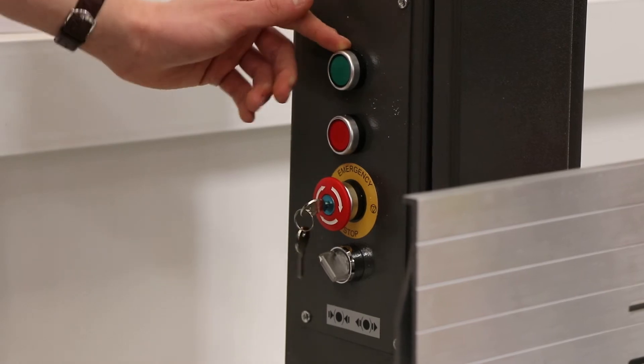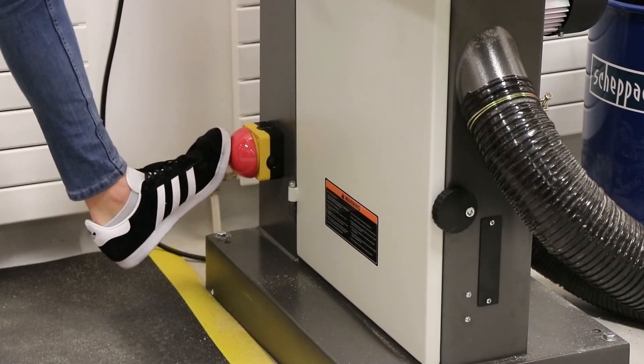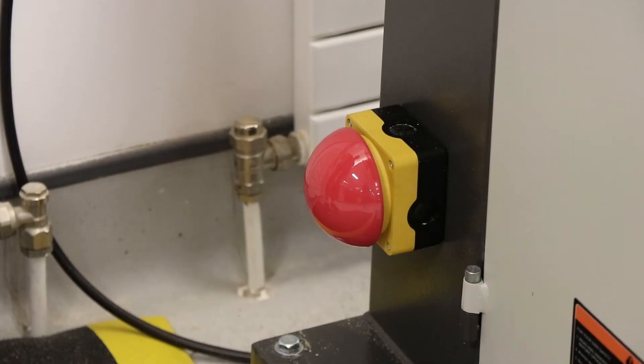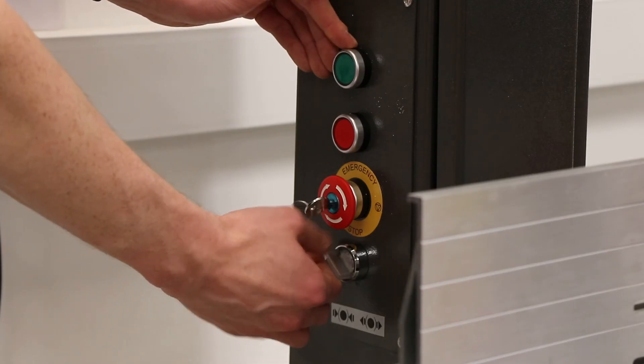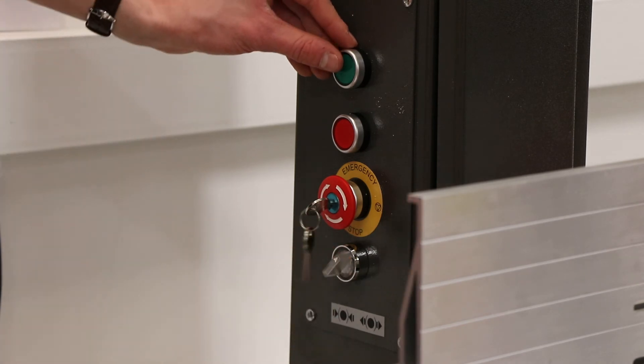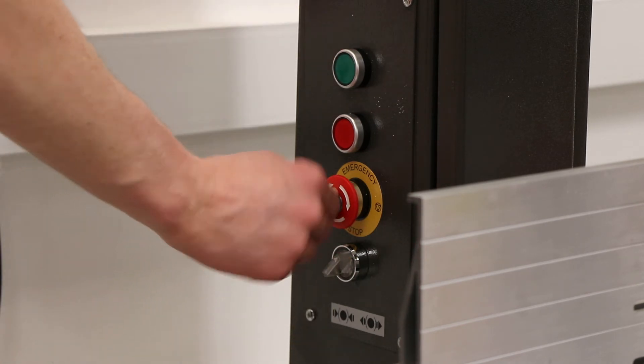You can also use the emergency stop to turn off the machine. This needs to be pulled out and reset before the machine can be restarted. When you're done with the machine please reset the grey electromagnetic brake switch and remove the key. Return the key to reception when you're done.